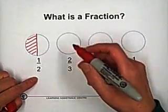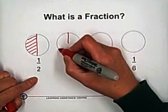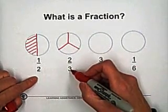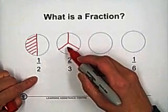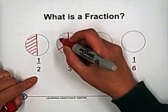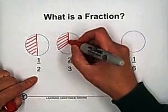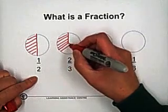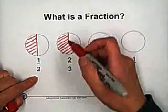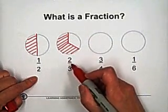Two over three — you can express it this way. Cut this pie into three parts. So the three represents the total number of equal parts, and we selected two parts. So the shaded part represented by a fraction is two over three.